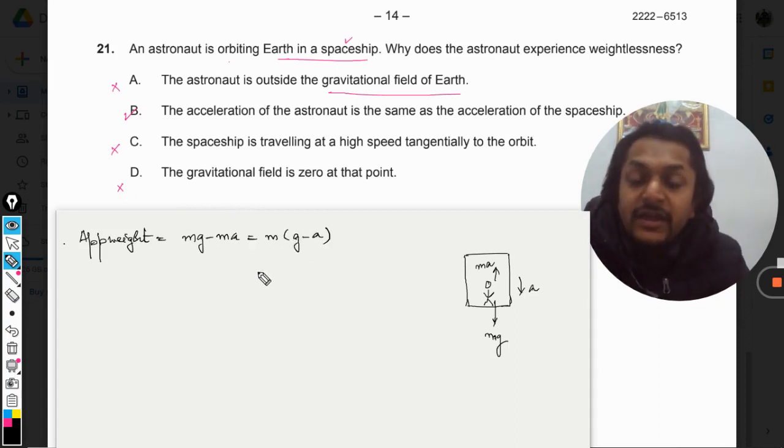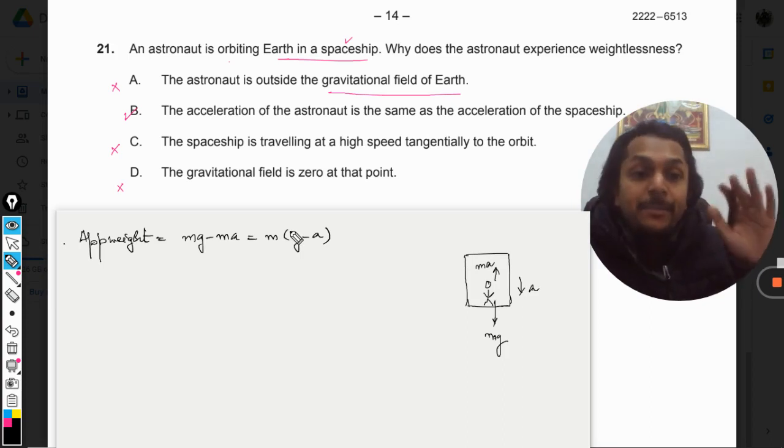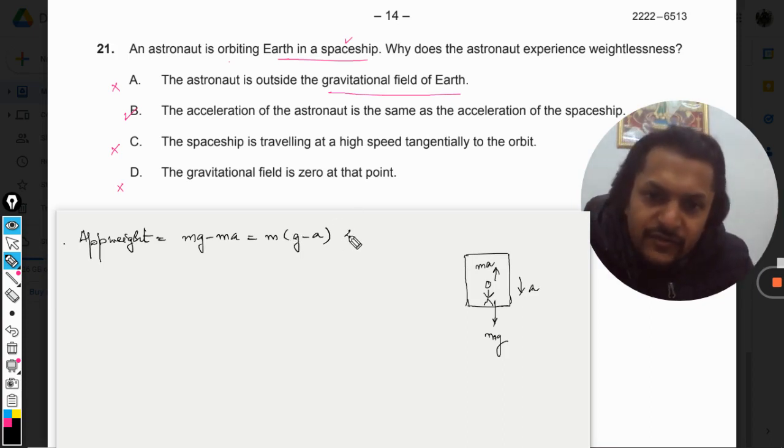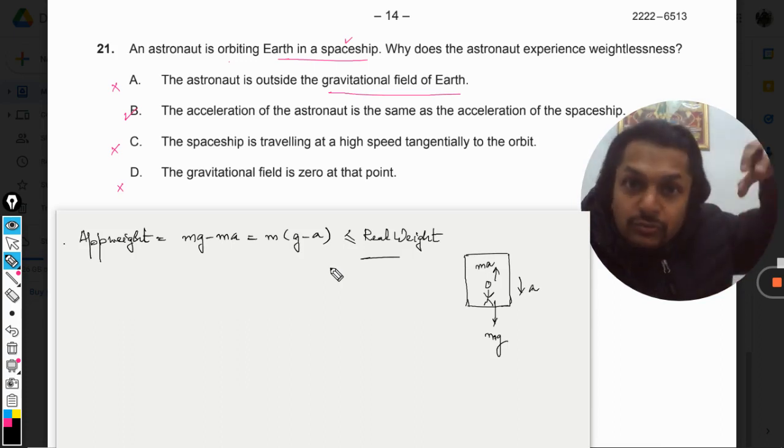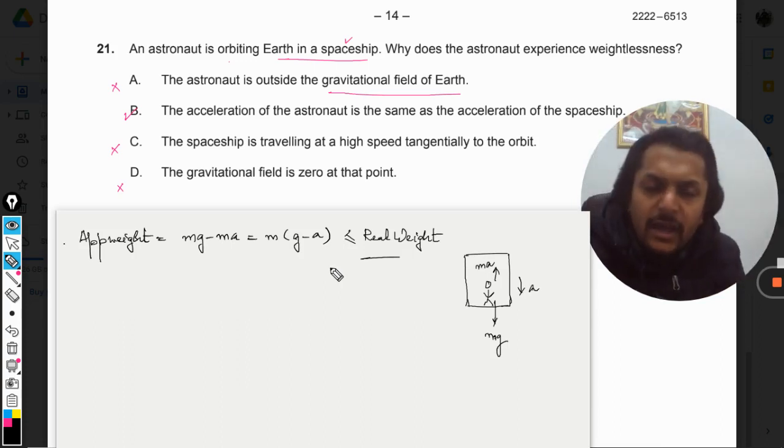So apparent weight here comes out to be equal to mg minus ma. So it means m is taken common, so g minus a. Now it means that the apparent value of this weight will be lesser than the real weight. So you would be feeling lighter when the lift is starting to move downwards.